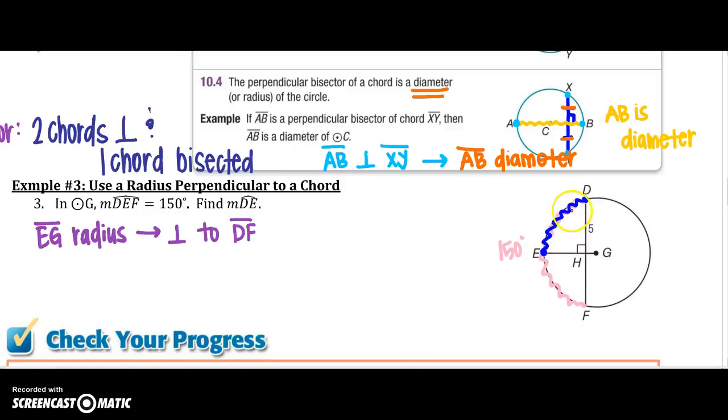With that information, because of our theorem that we just said, I know that E, G bisects arc D, E, F, so I can say that arc D, E, so this arc, is congruent to E, F.